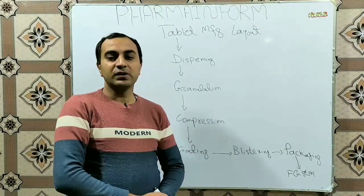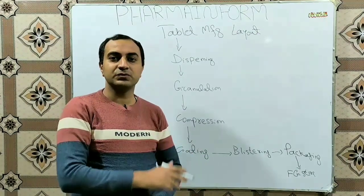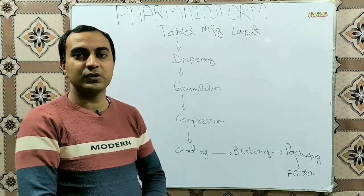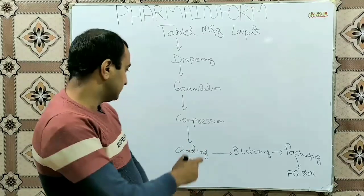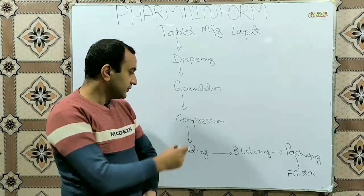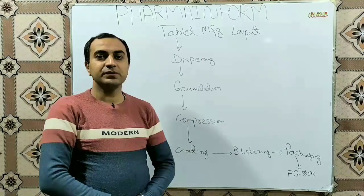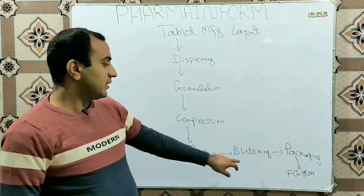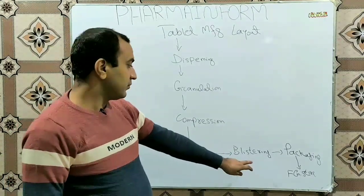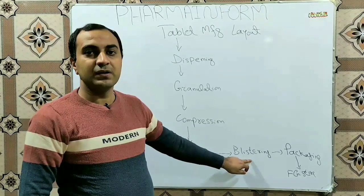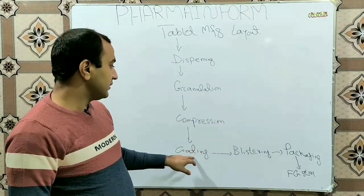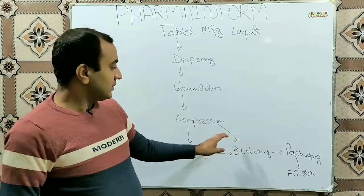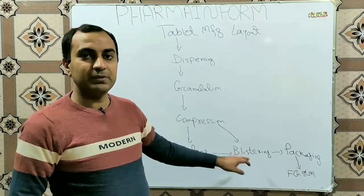Some tablets are uncoated and some are used in the form of coating. Tablet coating types include sugar coating, film coating, and enteric coating. If coating is required after compression, we coat our tablets, and then these coated tablets are ready for blistering. If we are not using a coating stage, the tablets from compression are directly sent to the blister area for the blistering stage.